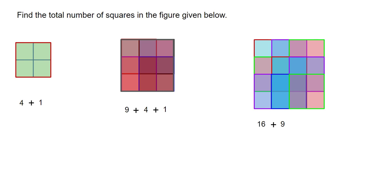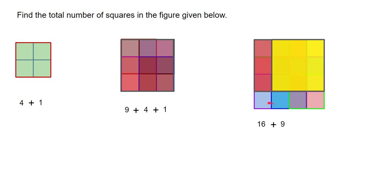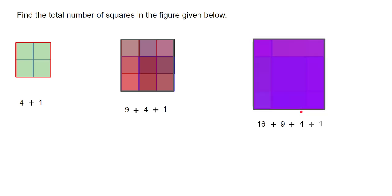Now let's move on to three by three squares. We have one three by three square here, the second one here, the third one along these lines, and the fourth one — so there are four three by three squares. And are there any four by four squares? Yes, there is one big four by four square here.